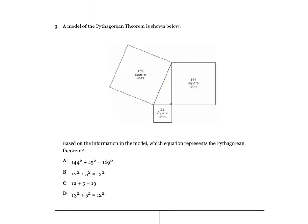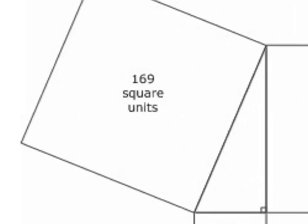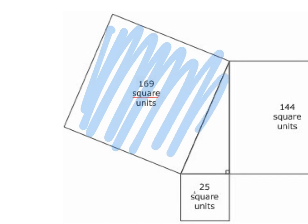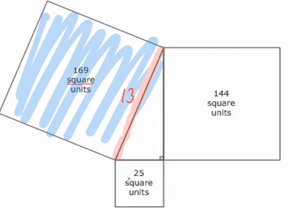On number 3, it says a model of the Pythagorean theorem is shown below. Based on the information in the model, which equation represents the Pythagorean theorem? You're going to take the square roots of each value they give you — because they say square units, that's the area of the square. If it's 169 square units, this side length is the square root of 169, which is 13. Same thing on the others: 144 square units means the side is 12, and 25 square units means the side is 5.